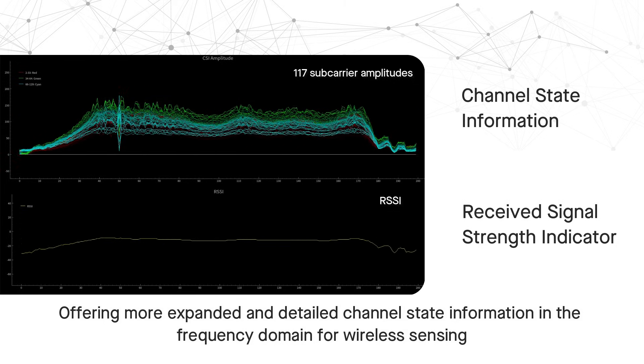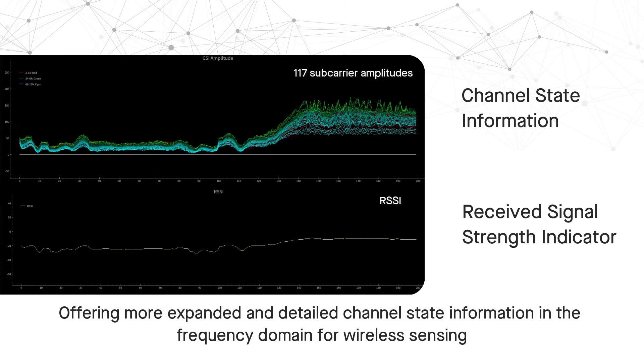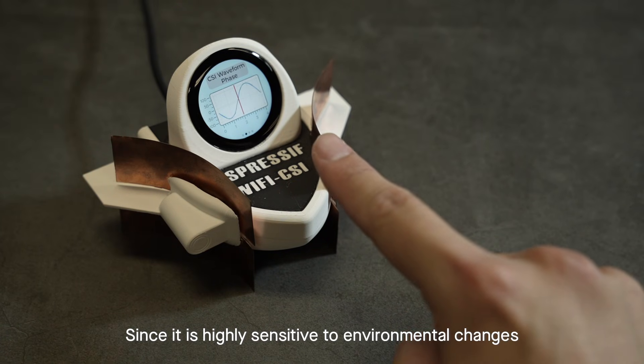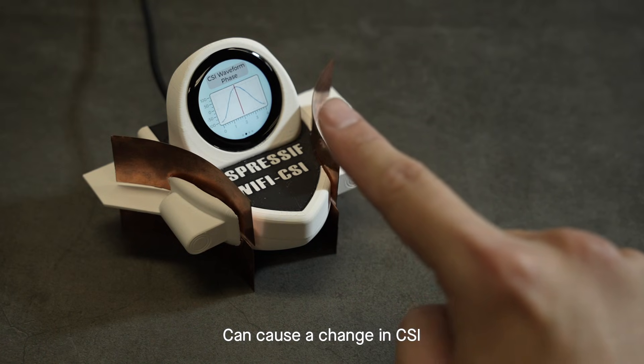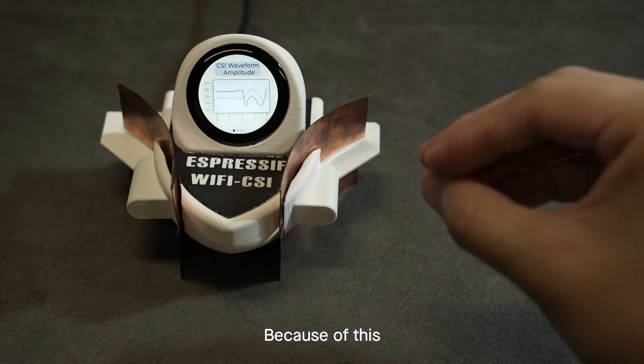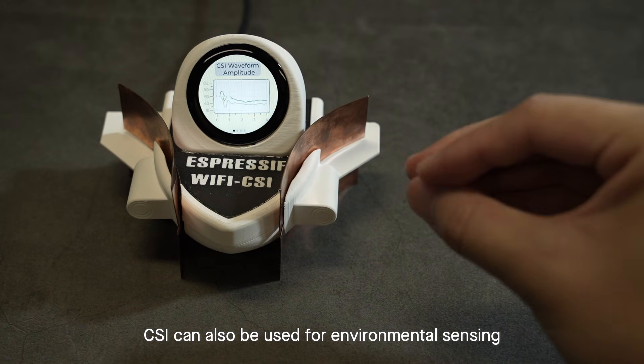Since it is highly sensitive to environmental changes, even the slight movement of a finger can cause a change in CSI. Because of this, CSI can also be used for environmental sensing.